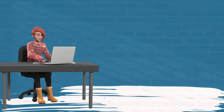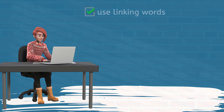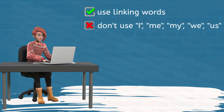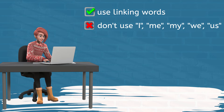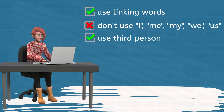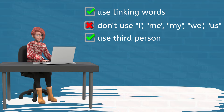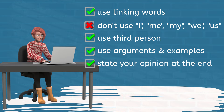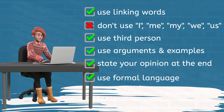There are some tips you should keep in mind when writing for and against essays. Use linking words that connect a paragraph with the previous one. Do not use first person pronouns such as I, me, my, we, us, etc. Avoid addressing readers as 'you.' It is better to use third person singular and plural. Avoid using arguments that you cannot support — remember that you have to justify with examples. State your opinion only in the concluding paragraph. Finally, you should always use formal language.